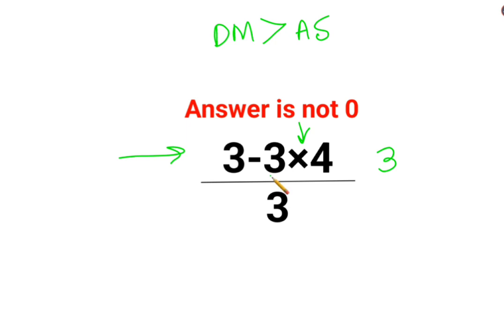So we will keep 3 as it is. Minus 3 multiplied by 4 is minus 12 upon 3.